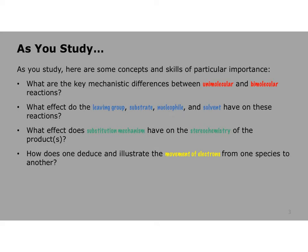As we go forward, there are some things you're going to want to pay attention to. Because we're going to deal very specifically with mechanisms, we need to understand some important details — for instance, understanding the difference between what we call a unimolecular and a bimolecular process. These refer to the kinetic behavior of reactions. There is a group called a leaving group. What do we mean when we refer to the substrate? What do we mean when we refer to nucleophiles, and what makes something nucleophilic? And how does solvent come into play in these reactions?